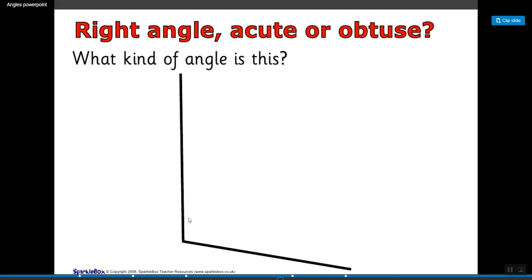And finally, this one, if you actually look closely, you can't exactly make a square so it must be obtuse. Alright guys, I hope that you had fun learning about the different types of angles. Bye!